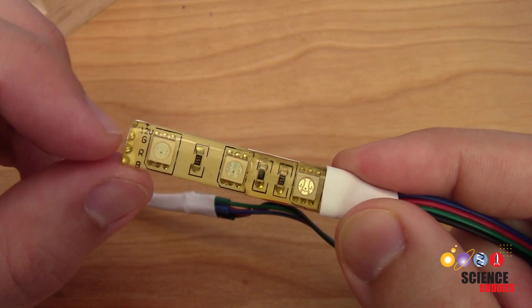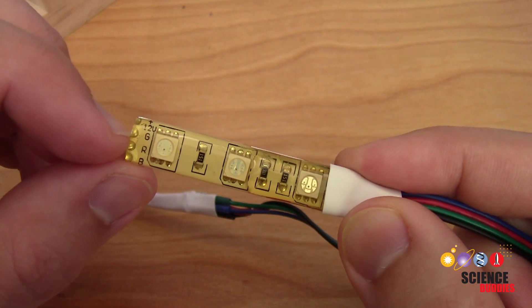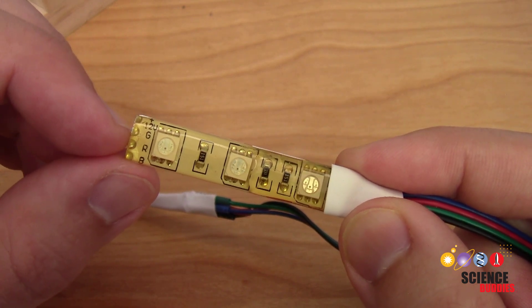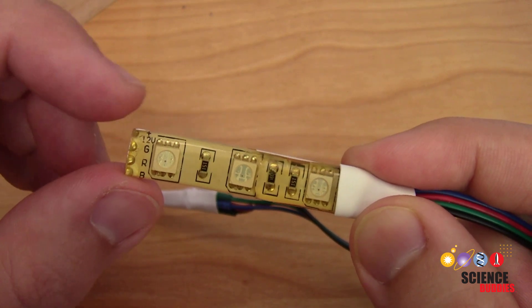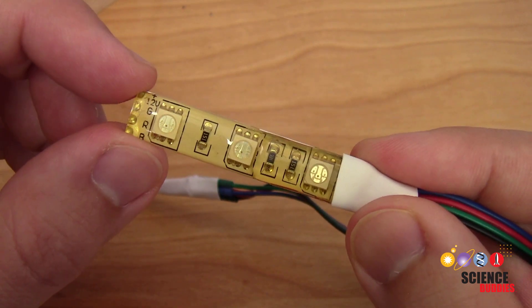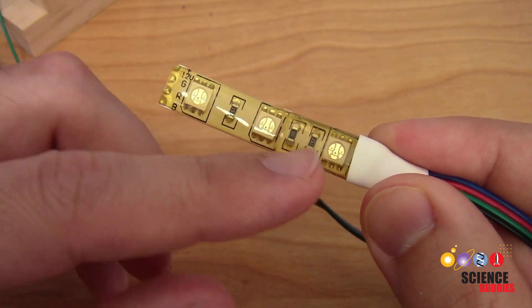So in this video we are going to focus on connecting and controlling the LED strip with the Arduino. Again, we have another video that shows you how to build the fountain and power the pump. Now there are several different types of these LED strips, so you have to be careful and make sure you know what you are buying.